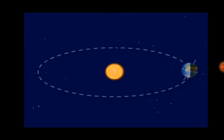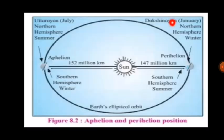Next we learn about the perihelion and aphelion positions of the Earth. The path of the revolution of the Earth around the Sun is elliptical — in an oval shape. The Sun is at one of the two centers of the ellipse. As the Earth moves in this ellipse, its distance from the Sun does not remain the same.